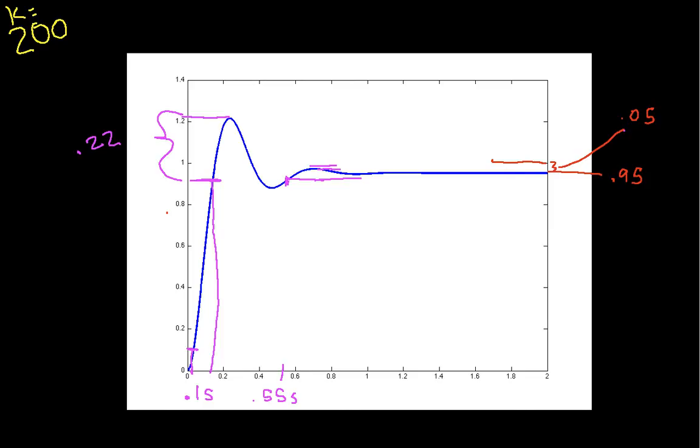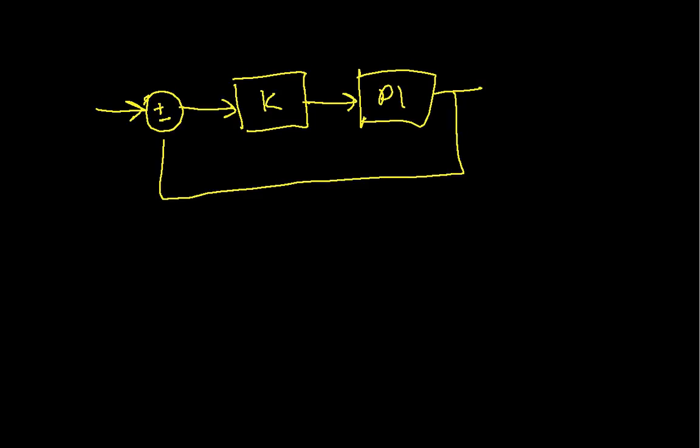So basically, what we've discovered is that if we have a system where we're using only proportional gain, so I'll quickly redraw the system, since I wiped it out before. So where our controller is only a gain, and then we have the plant, we have this trade-off between wanting to use a high gain to minimize the steady state error, and the fact that the higher the gain gets, the larger our overshoot gets.